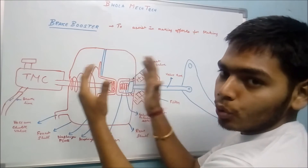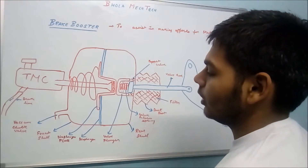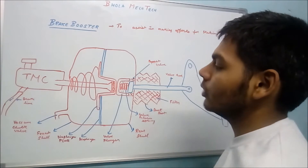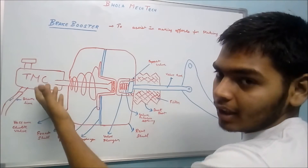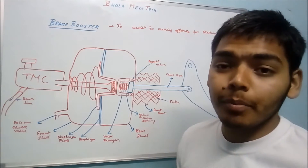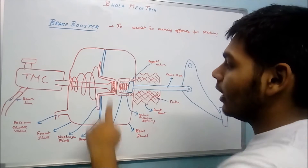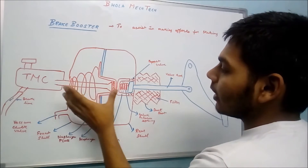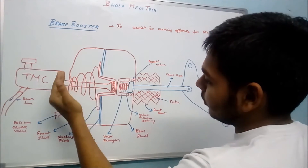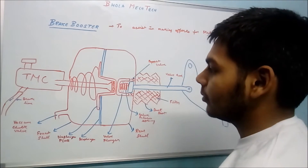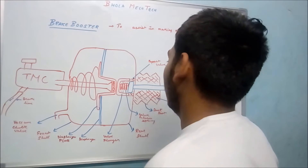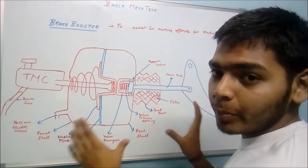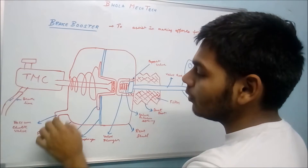The diaphragm plate transfers the force to the TMC push rod. There is a front shell and a rear shell — these two shells make up the whole brake booster. There is a vacuum check valve through which vacuum is created inside the brake booster. Then there is the TMC push rod connected to the TMC, which I explained in my earlier video. There is also a diaphragm return spring that acts to move the diaphragm in the backward direction. Finally, there is the TMC and the brake lines.